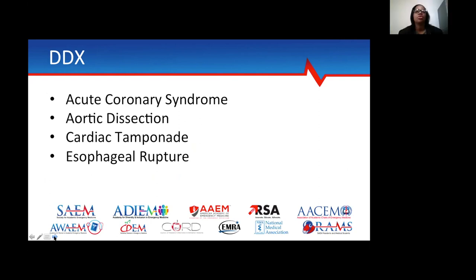What diagnoses would you be thinking about in the differential for this patient? Could this be ACS? Could this be an aortic dissection, cardiac tamponade, or esophageal rupture?